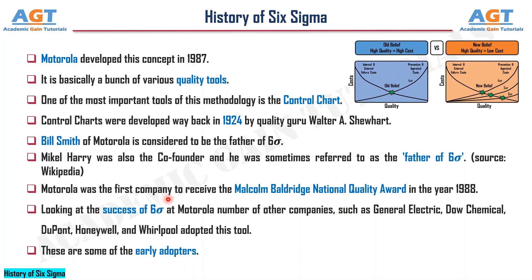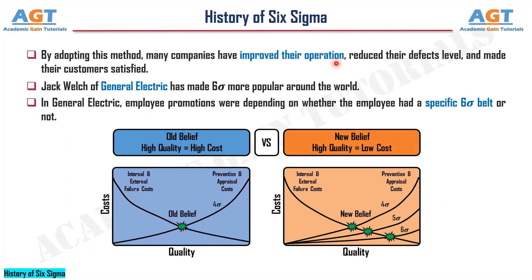Motorola was the first company to receive the Malcolm Baldrige National Quality Award in the year 1988. Looking at the success of Six Sigma at Motorola, a number of other companies such as General Electric, Dow Chemical, DuPont, Honeywell, and Whirlpool adopted this tool. These are some of the early adopters. By adopting this method, many companies improved their operations, reduced their defect levels, and made their customers satisfied. Jack Welch of General Electric made Six Sigma more popular around the world. In General Electric, employee promotions depended on whether the employee had a specific Six Sigma belt or not.